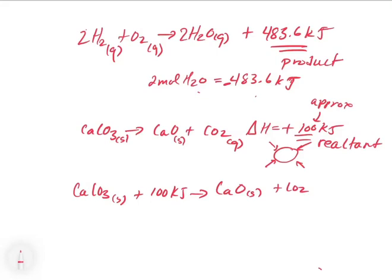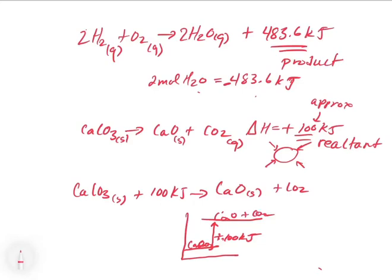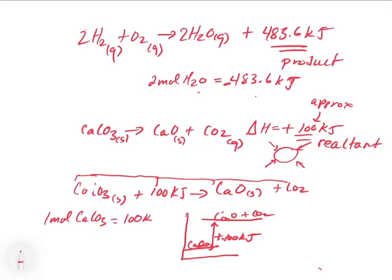The enthalpy diagram shows we're going up in energy. We start with calcium carbonate plus our 100 kilojoules as reactants, which gives us calcium oxide plus CO₂ as products. This reinforces those enthalpy diagrams and helps you see the stoichiometry. For every one mole of calcium carbonate consumed, we need 100 kilojoules of energy in that reaction.